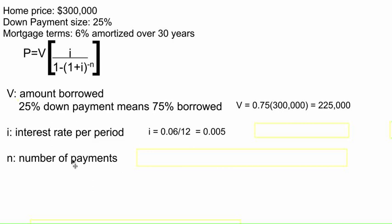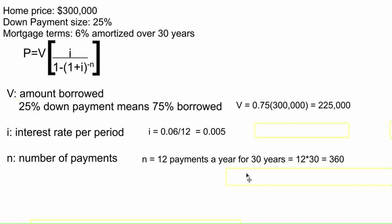Finally, the number of payments. The number of payments is not 12, and it's not 30 — it's kind of both, in a way. 12 months a year for 30 years gives us 12 times 30, or 360 payments. These are typical numbers for a real-life mortgage. It's a pretty nice house, but the rate and the down payment size are pretty realistic. So we now have all our variables: the amount borrowed is $225,000, the period interest rate I, and the number of payments is 360.